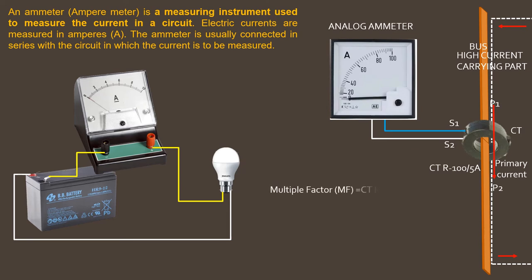Multiplication factor is equal to CT ratio divided by meter CT ratio. Here, the multiplication factor is one. The reading of the ammeter is to be multiplied by multiplication factor to get actual reading.